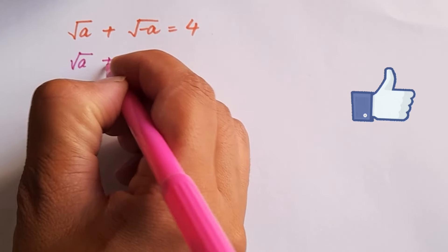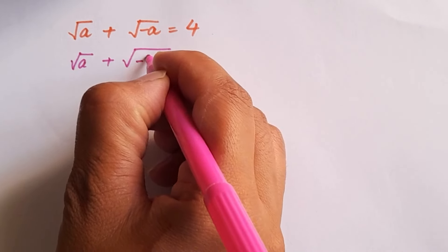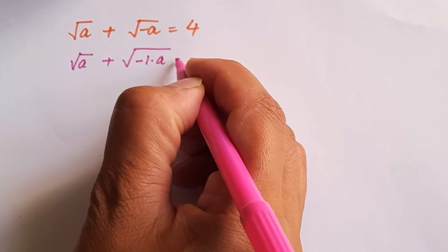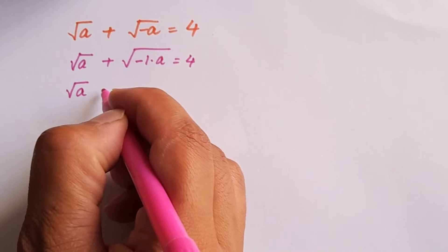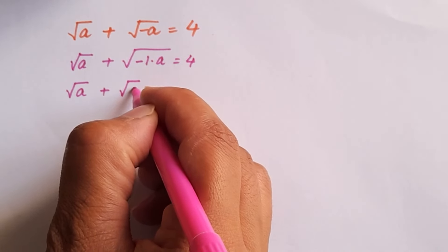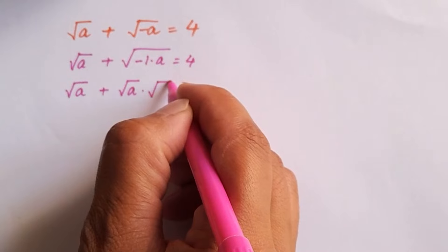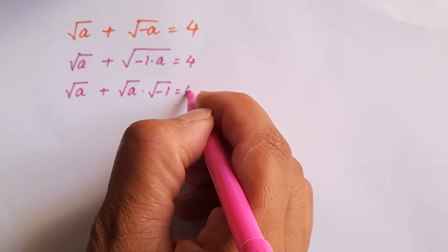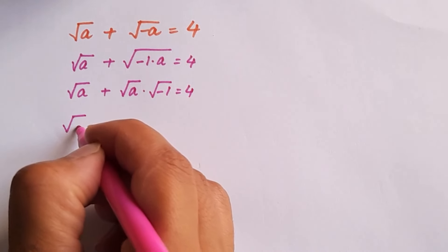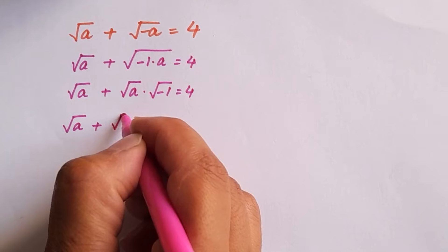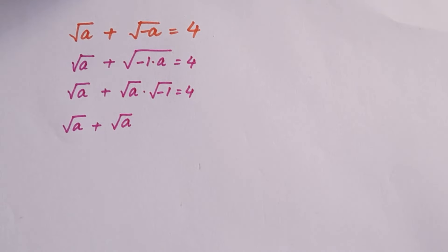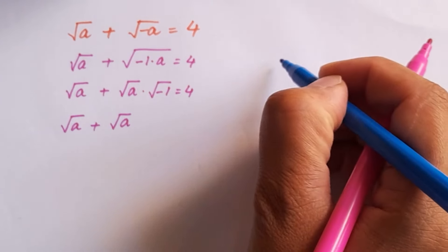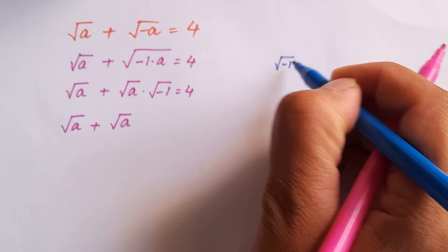Root a plus root negative a is the same as root negative 1 times a equals 4. And if we write it in separate square roots, root a times root negative 1, root a plus root a times root negative 1 is equal to iota, because we know the value of iota is equal to root negative 1.